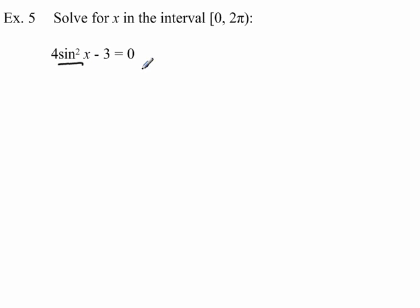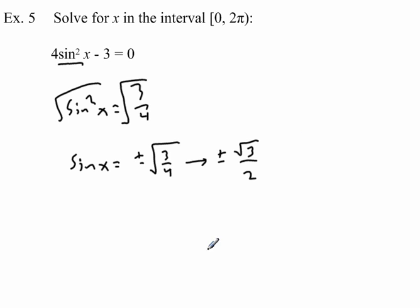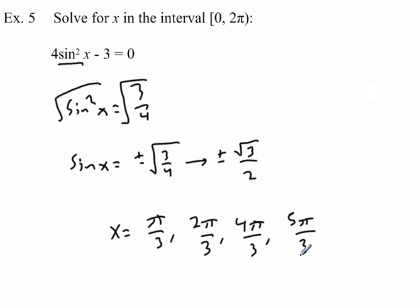Same kind of problem: get sine² by itself — add 3, divide by 4 — giving sine²(x) = 3/4. Taking the square root of both sides with ± gives sine(x) = ±√3/2. Looking on the unit circle for where the y-coordinate equals ±√3/2, it happens in four places: x = π/3, 2π/3, 4π/3, and 5π/3. Any of those angles would work.